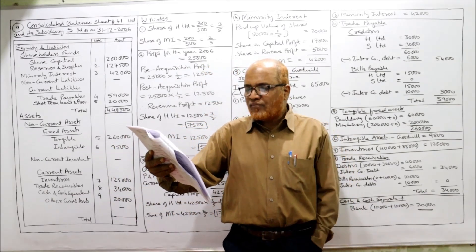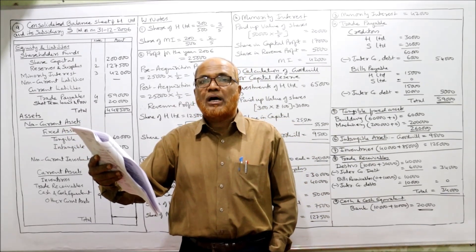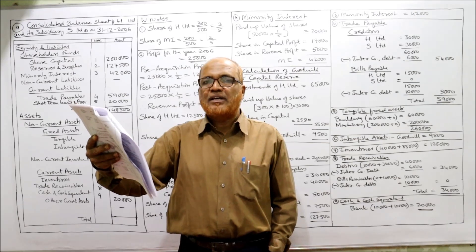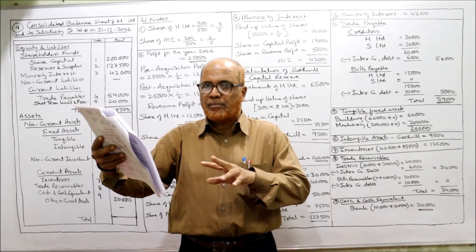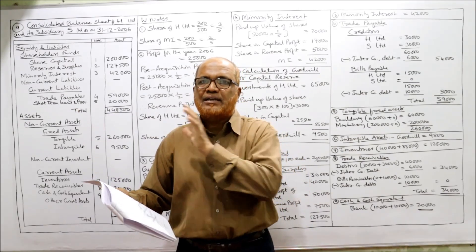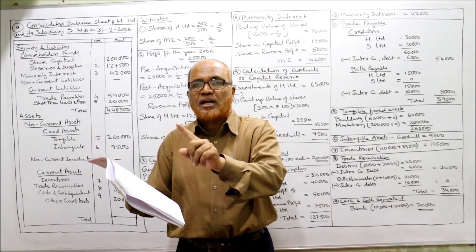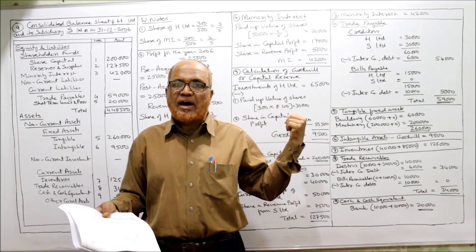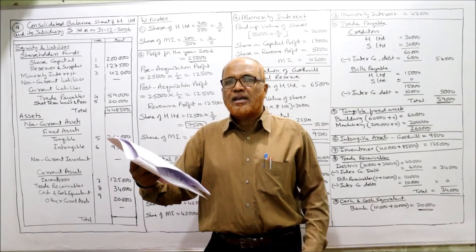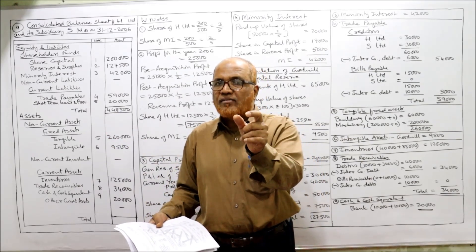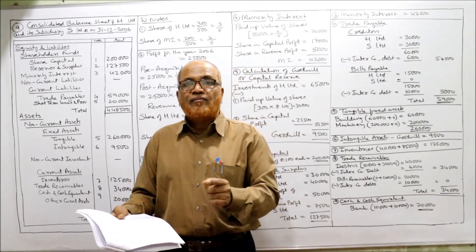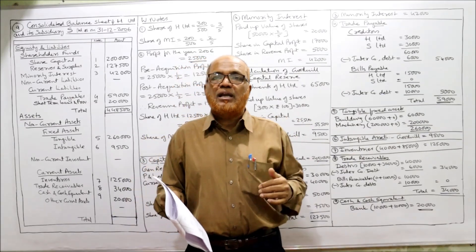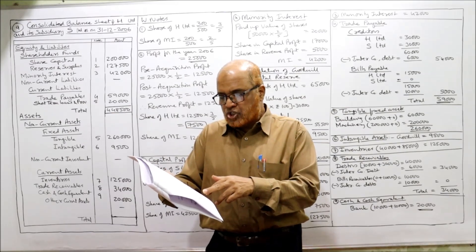Before starting the ninth problem, I expect viewers to have a printout of the problems given in the link under my description. Now for problem nine: the balance sheet of H Limited and S Limited as on 31st December 2006 is given. Share capital — shares of rupees 100 each: H Limited has 2 lakh, S Limited has 50,000. H Limited's share capital comes as-is in the consolidated balance sheet, whereas S Limited's share capital is used to calculate goodwill or capital reserve and minority interest. General reserve is also given for both companies.